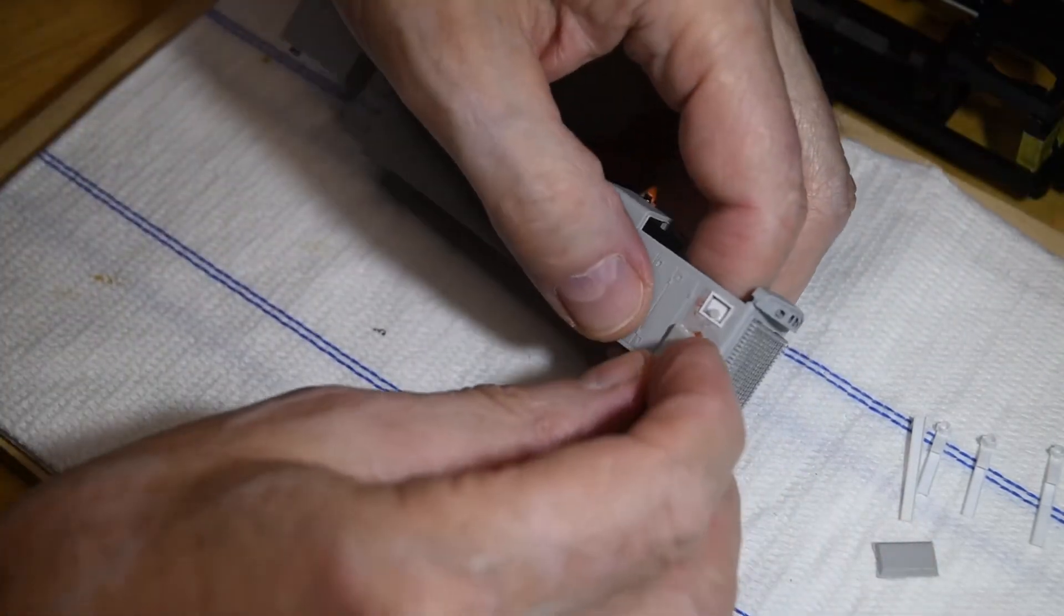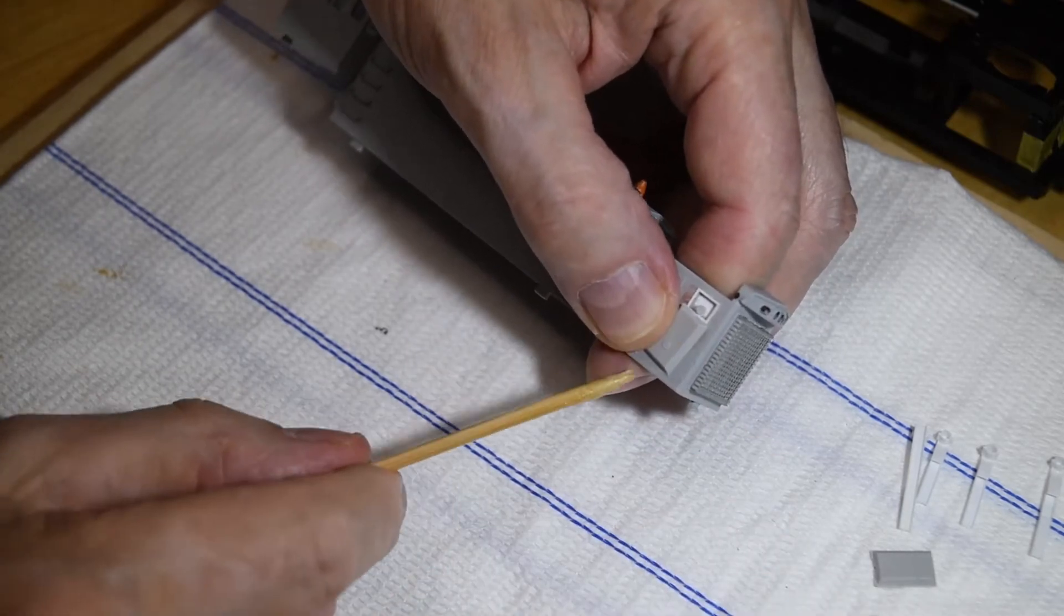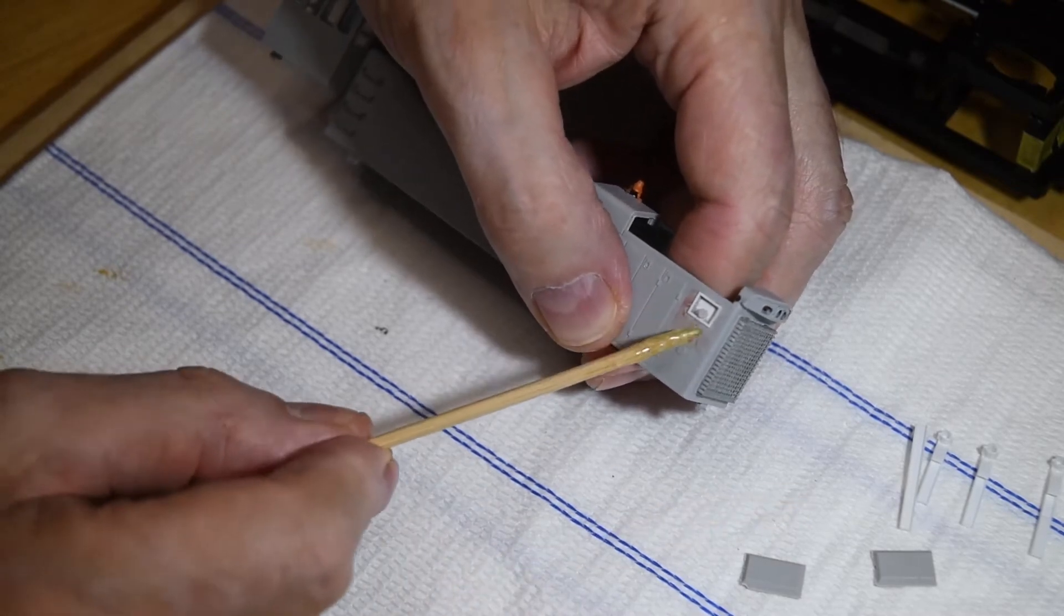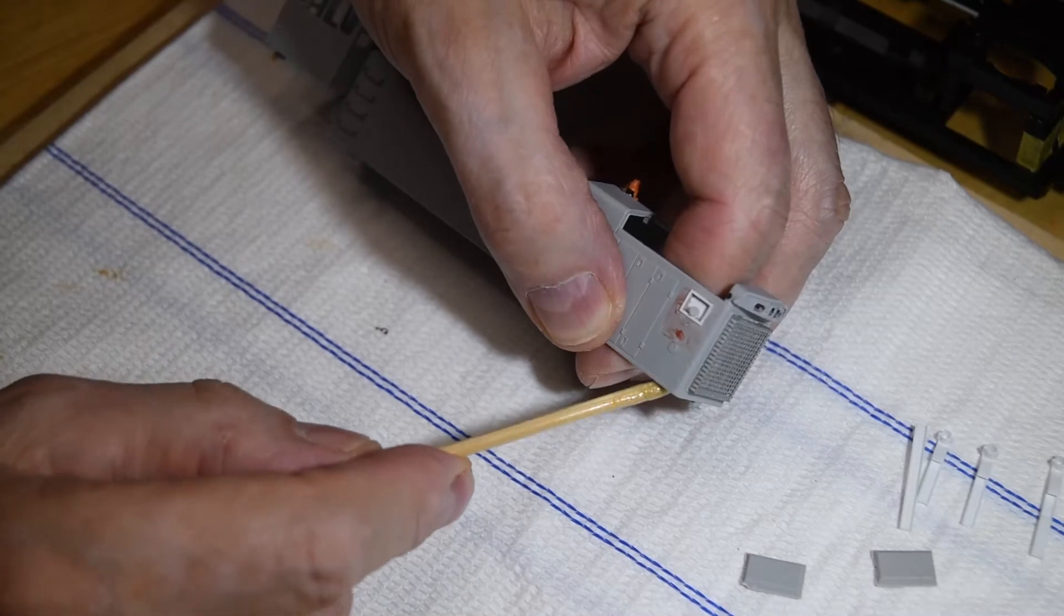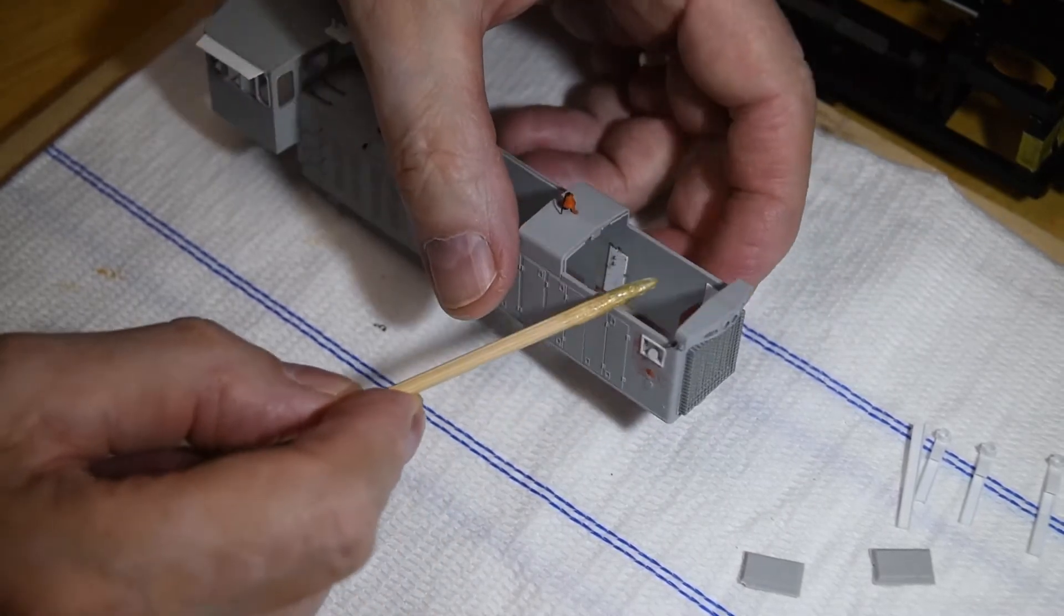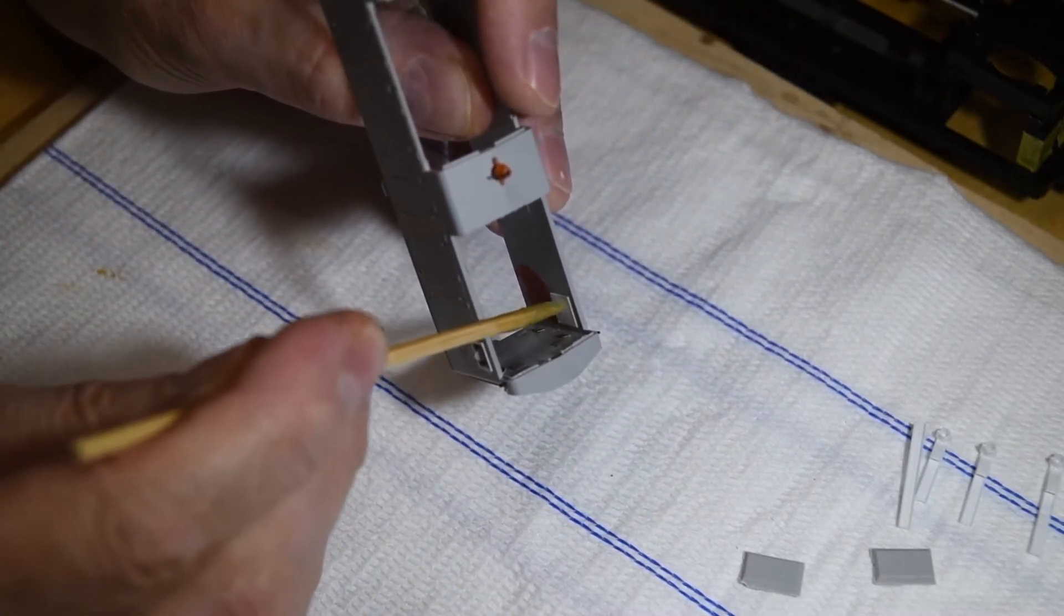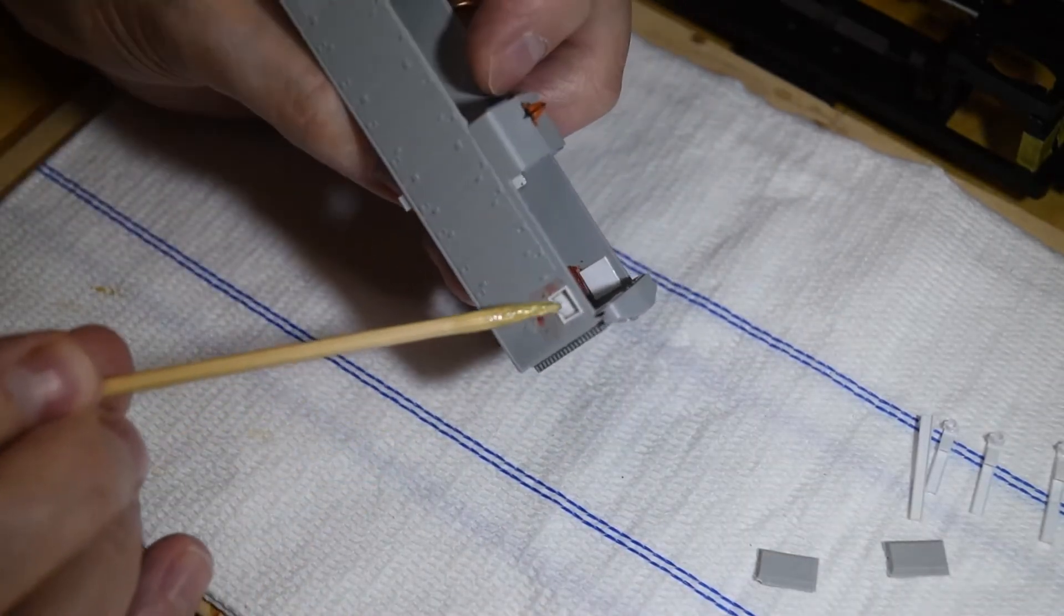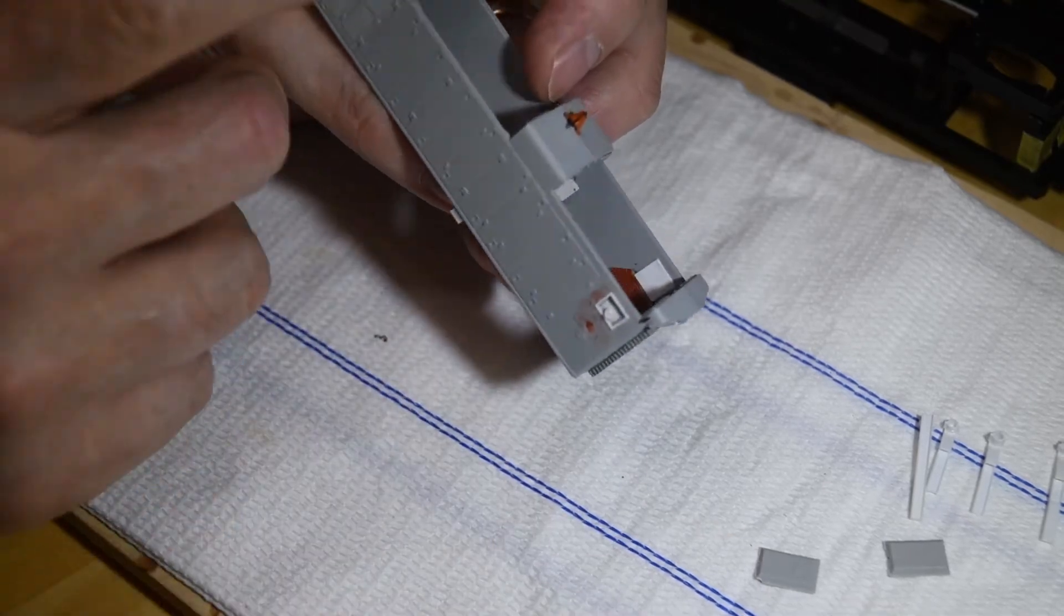These sand filler blisters had to come off because they're not on the prototype. I managed to pry those off - they were really hard to get off, probably caused a little damage which I filled. There's a few scratches which are fine, you see those on the prototype anyway. I packed out the back with 10 thou on both sides, then remounted the sand filler hatch and framed it up like the prototype.